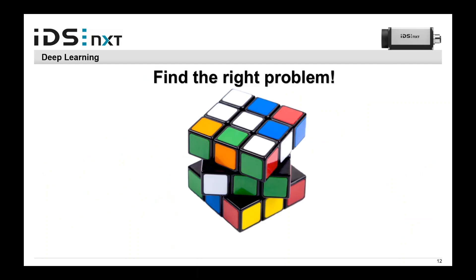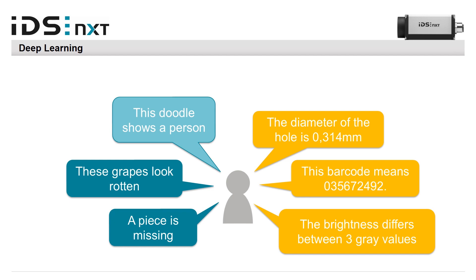Where can we use deep learning now? We have to find the right problems because deep learning cannot solve everything. Typical applications are those where a qualitative decision has to be made — like whether this doodle shows a person, whether these grapes look rotten, or whether a piece is missing — applications where a human could easily judge. Applications that don't go well with deep learning are those requiring precise measurement or reading, like the diameter of a hole, reading a barcode, or assessing image brightness. These can be supported by deep learning, but not directly solved by it at the moment.